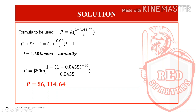We equate for every 6 months — meaning semi-annual. So, (1 + I)^2 − 1 = (1 + 0.09/4)^4 − 1. We cancel the minus 1 on both sides. Then I = 4.55% semi-annual, or 0.0455.